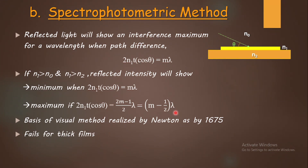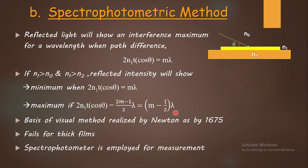When white light is used, the reflected light shows maxima for various wavelengths satisfying the interference condition. This is the basis of the visual method of monitoring film thickness, first realized by Newton as early as 1675. However, the limitation is that for thick films, many maxima in the reflected spectrum mix to make the light appear white, so visually we cannot clearly distinguish maxima or minima to determine thickness.